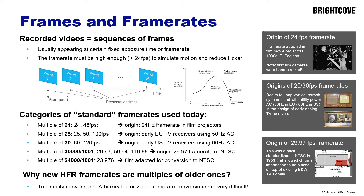29.97 and other fractional frame rates came with the work of the NTSC commission in 1953, which tried to design the first color television system. The problem they tried to solve was pretty peculiar: they tried to squeeze chroma information into a band already allocated for black and white television. To do so, they had to reduce the frame rate — dropping one frame out of 1001 produced 29.97. And we still enjoy it today. In fact, recently the Ultra HD forum adopted 119.88 frame rates, so design decisions of 1953 still follow us into the Ultra HD era.